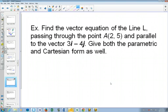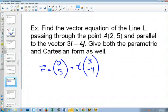So we've got a point, and we know that it's parallel to the vector 3i minus 4j. So our vector equation of our line will equal our point (2, 5) plus some parameter. And since it's parallel to 3i minus 4j, that is our direction vector.